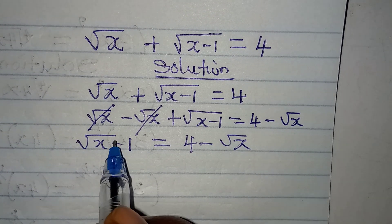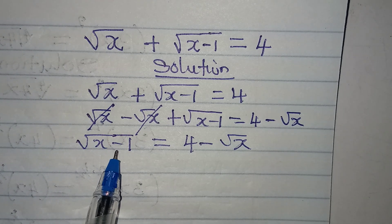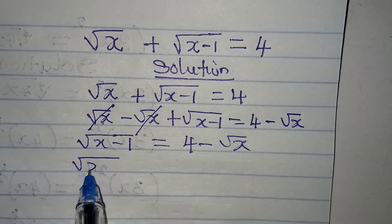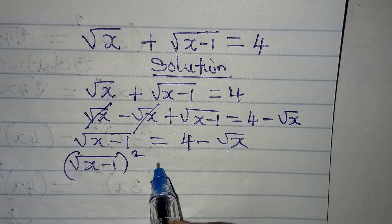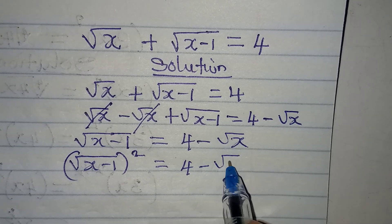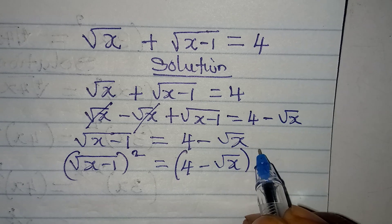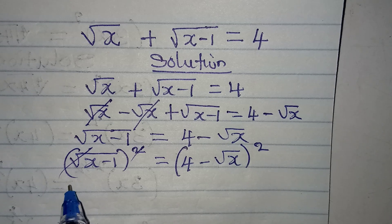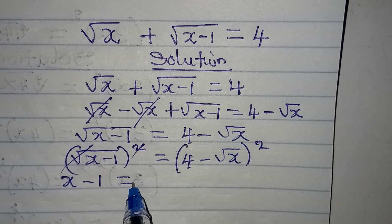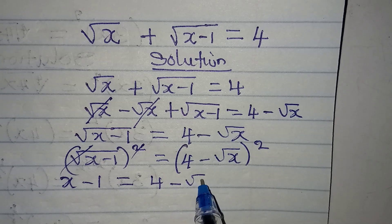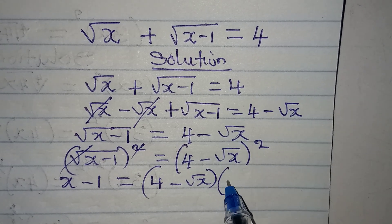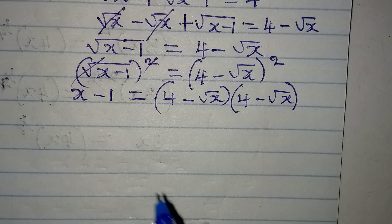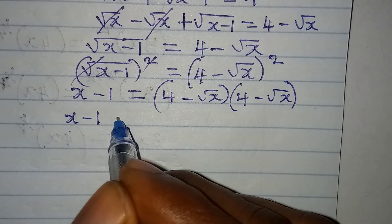The next thing we'll do is remove the square root, and we do that by squaring both sides. So we have square root of x minus 1, squared, equal to 4 minus square root of x, squared. The square root and square cancel, giving us x minus 1 equal to 4 minus square root of x, multiplied by 4 minus square root of x.